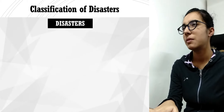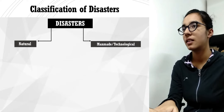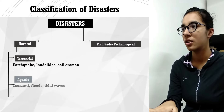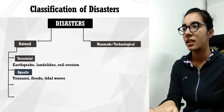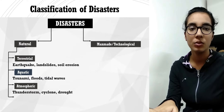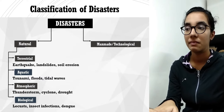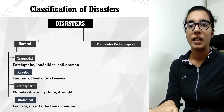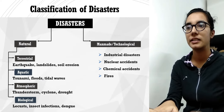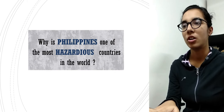Let's understand the classification of disasters. Disasters are of two types: natural and man-made. Under natural, we have terrestrial — related to land, like earthquakes, landslides, soil erosion. Aquatic — related to water or sea, like tsunami, floods, tidal waves. Atmospheric — related to atmosphere and air, like thunderstorm, cyclone, drought. Biological — insects and diseases like dengue or malaria. Examples of man-made are industrial disasters, nuclear accidents, chemical accidents, fire, war, civil strife, structural failure, and pollution.